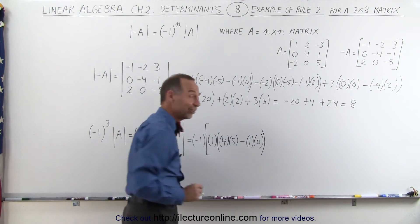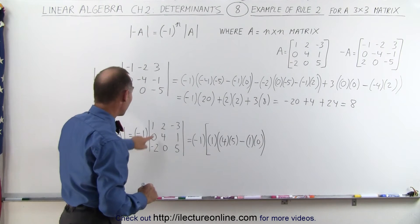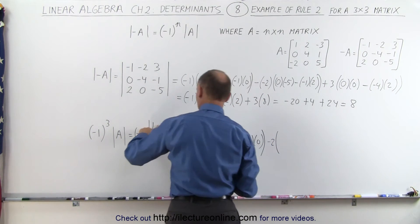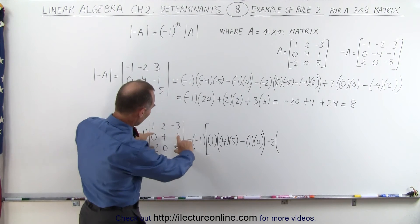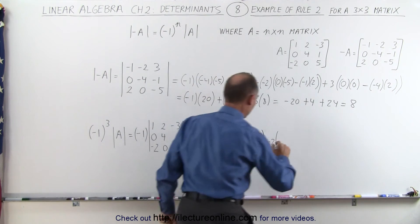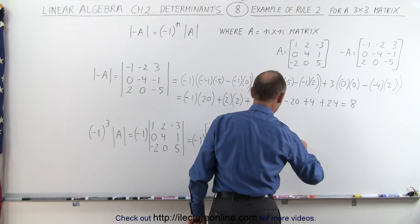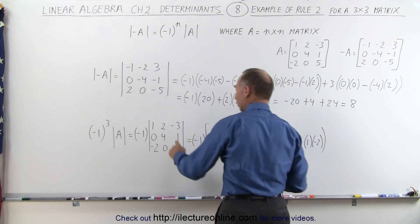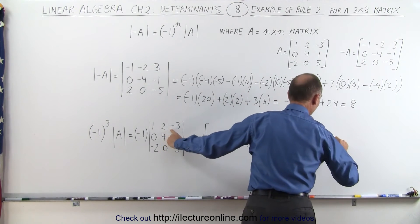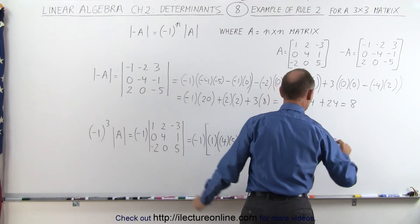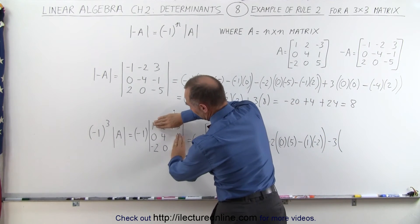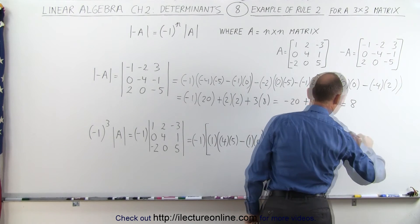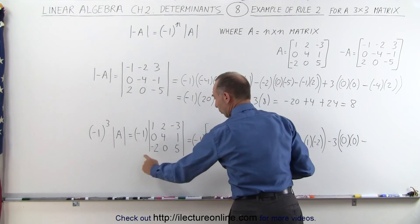Now we take the negative of that element, negative 2, times — we cross out that row and that column — we end up with those four elements: 0 times 5, minus 1 times negative 2. Finally, we add a minus 3, so plus negative 3, times — getting rid of that row and column — we have 0 times 0, minus 4 times negative 2.